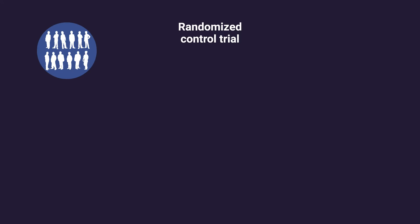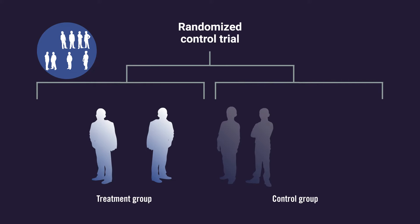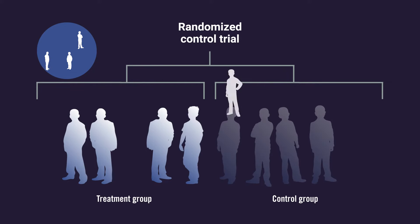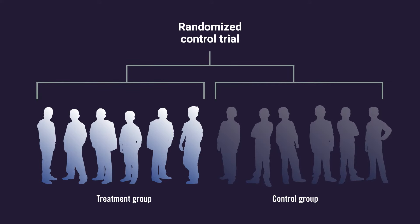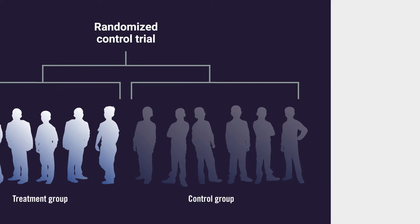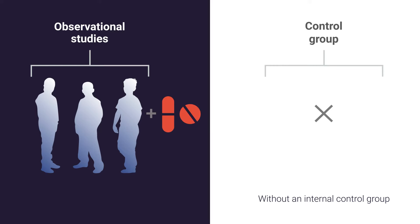Randomized control trials, or RCTs, randomly assign patients who meet the inclusion criteria to either a treatment or control group, and are considered the gold standard for evaluating treatment efficacy. However, observational studies without an internal control group, such as product registries and open-label studies, are sometimes needed to assess the effectiveness of treatments, including those for rare diseases.